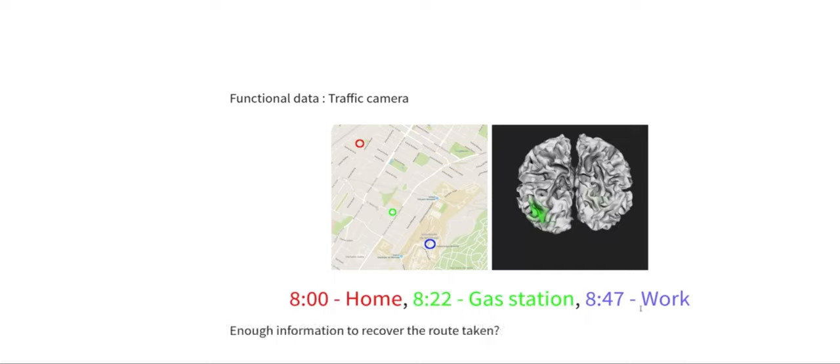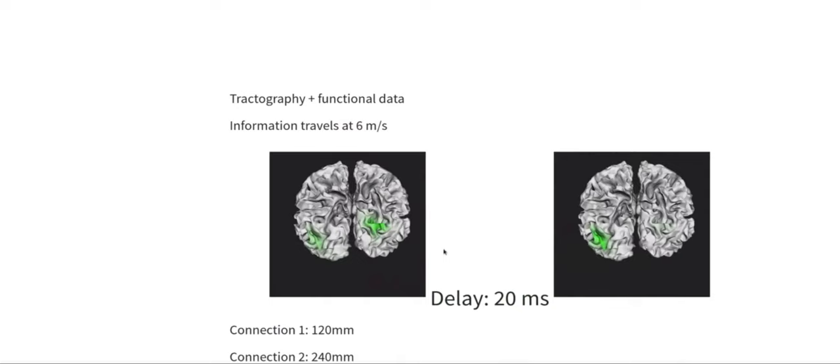Functional data is more like traffic cameras. If you place certain traffic cameras along your road network, you can see displacement of cars along those three points. For example, you might get information that someone started at home at 8, stopped at the gas station at 822, and ended up at work at 847. Is this information sufficient to recover the route that was taken? Well, it depends on the sampling rate. If you have enough information, enough points along the way, you might be able to do this. Or if there are not many roads that connect those points, then you might also be able to do it.